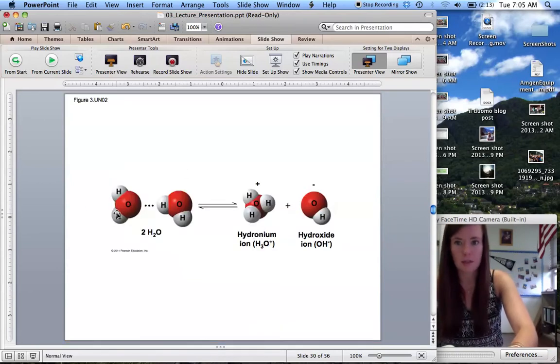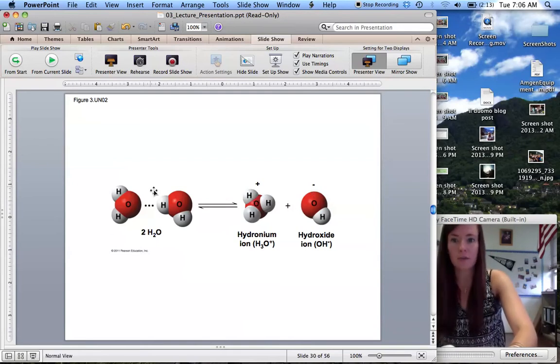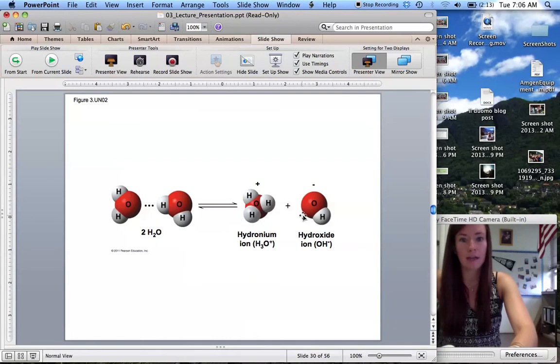So here's what we've just been talking about. We have two water molecules. One of the hydrogens left, this hydrogen left this water molecule as an H+. It left behind its electron, so there's the electron right there, joined over here. So we went from two H2Os to a hydronium ion and a hydroxide ion.